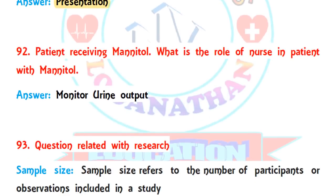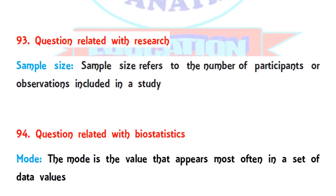Question 92: a patient is receiving mannitol — what is the role of the nurse in mannitol administration? What kind of observation should the nurse perform? The primary observation done by the nurse is urinary output.